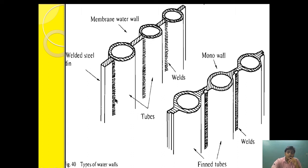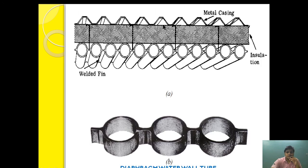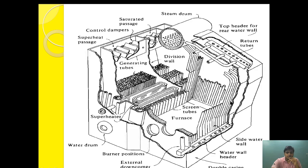The membrane water wall and monowall tubes have both advantages and disadvantages. They reduce the amount of refractory used but are costly to implement. If any damage occurs, the tube must be repaired before the boiler can be put back in service. If an explosion occurs, it may cause such damage that the whole membrane wall needs to be replaced at high cost. As you can see, just after the membrane wall, insulation and metal casing can be provided.